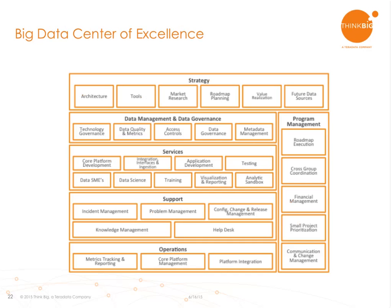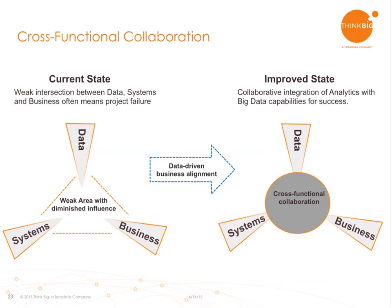Once you get initial success, you want a strategy for a center of excellence — comprehensive thoughts around how you manage your program, what services are provided by whom, how you do governance, how you evolve the roadmap, and how you support rollout across the organization. This model works well to scale success once customers are up and running with their first use cases. Cross-functional collaboration is key: big data becomes an opportunity to have a common project where different groups come together and create an area of strength.